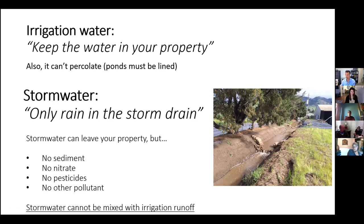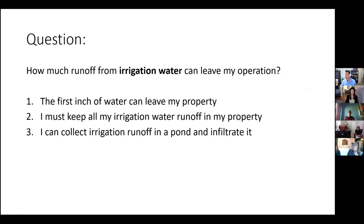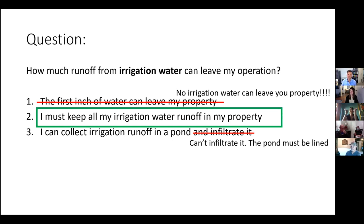If the rains then fill that empty pond and it overflows, it's still only rain — that's fine. I have a question: how much runoff from irrigation water can leave my operation? The answer is number two — you must keep all your irrigation water on your property. No irrigation water can leave your property, and you also cannot just infiltrate it by digging a hole. The pond must be lined to prevent infiltration.